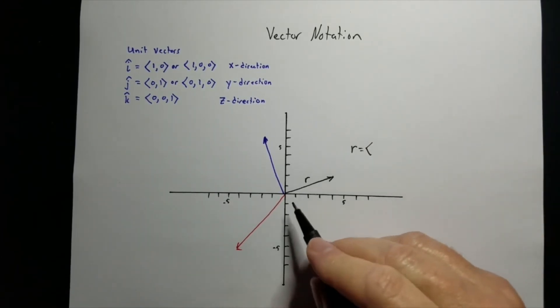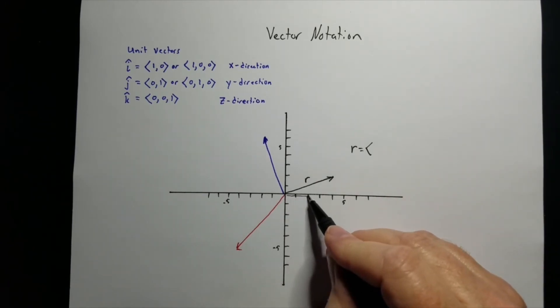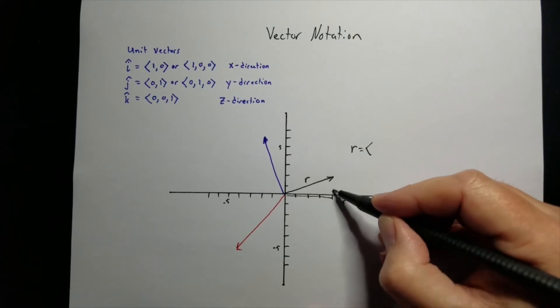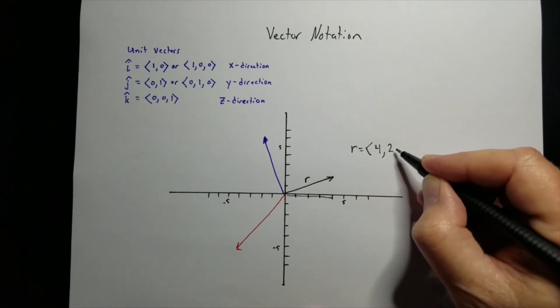So that one r could equal, I normally use brackets like this, but I've seen some use what looks like normal coordinate system. But this one is over 4 and up 2. So over 4, so that would be 4. Up 2, that would be 2.